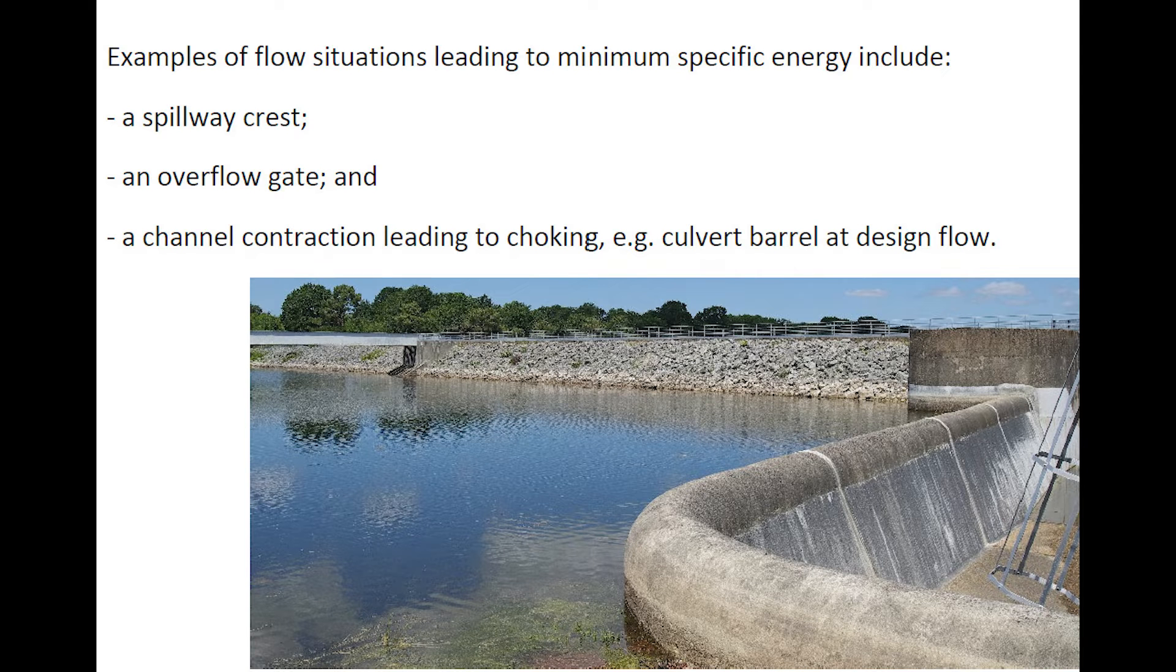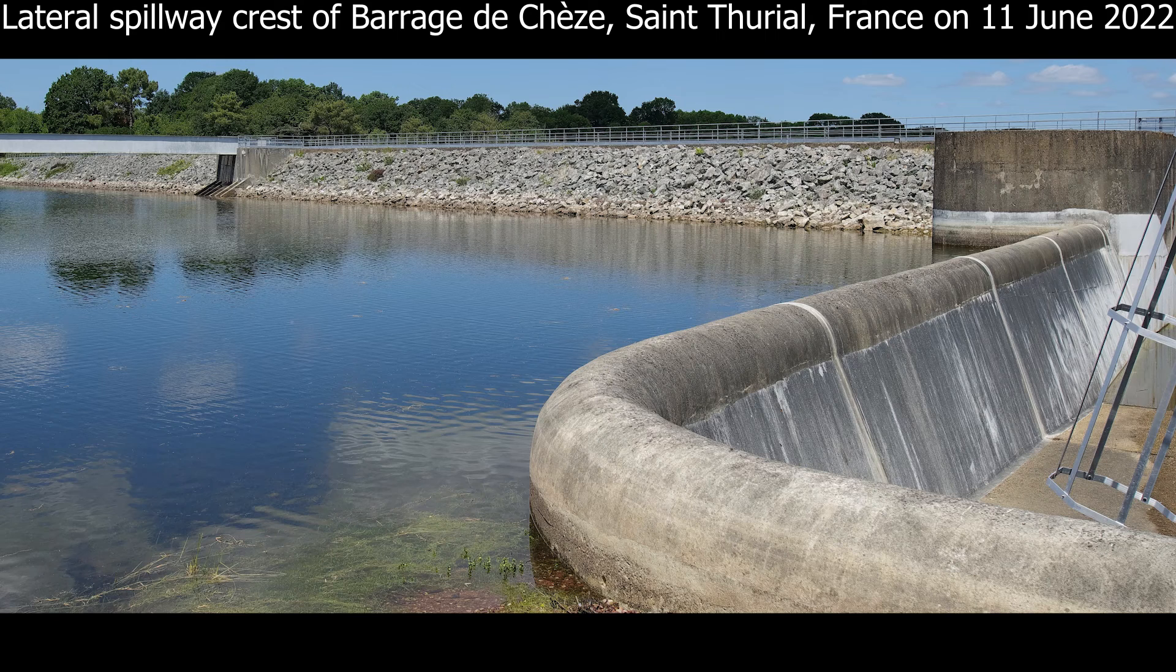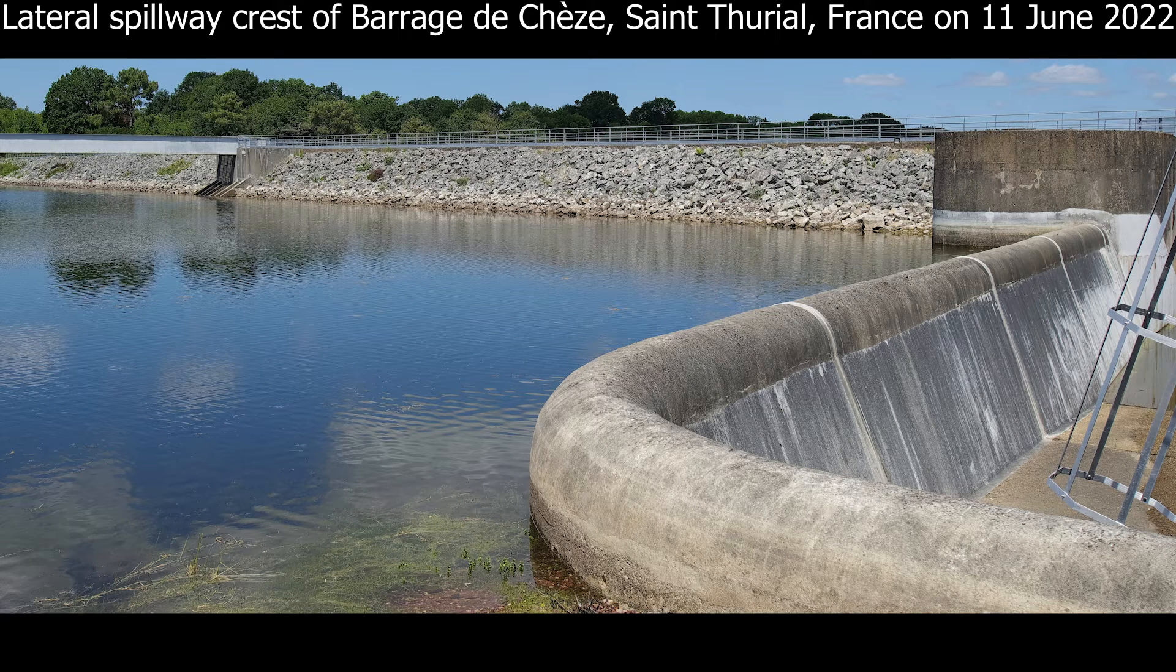Examples of such flow situations leading to minimum specific energy include a spillway crest, an overflow gate, or a channel contraction leading to choking, for example, a barrel of a culvert at design flow. This photograph illustrates the crest of a lateral spillway in France.